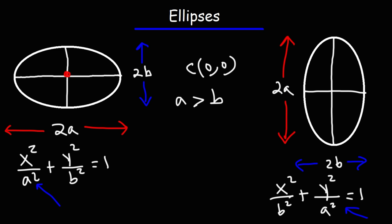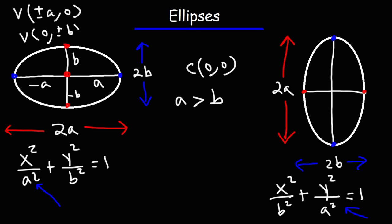With the center at the origin, the major vertices are at positive a and negative a along the major axis, and b and negative b along the minor axis. For the horizontal ellipse the coordinates of the major vertices are plus or minus a comma zero, and the minor vertices are zero plus or minus b. For the vertical ellipse on the right, the major vertices are zero comma plus or minus a, and the minor vertices are plus or minus b comma zero.